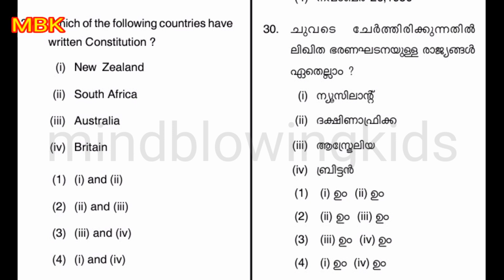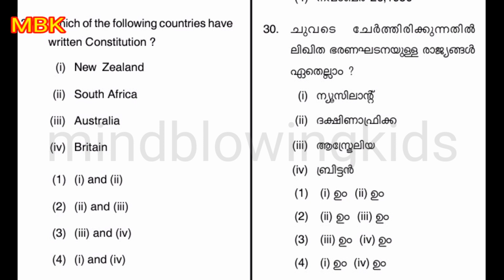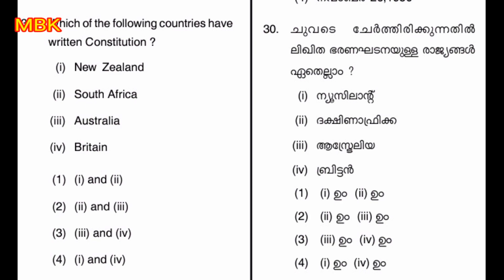Which of the following countries have a written Constitution? Option A: New Zealand. Option two: South Africa. Option three: Australia. Option four: Britain. The answer is option three — Australia.